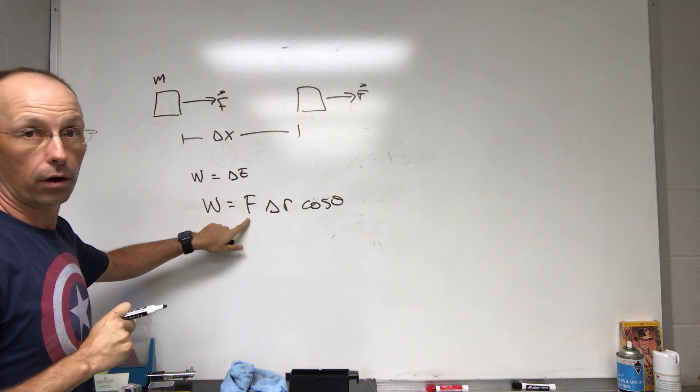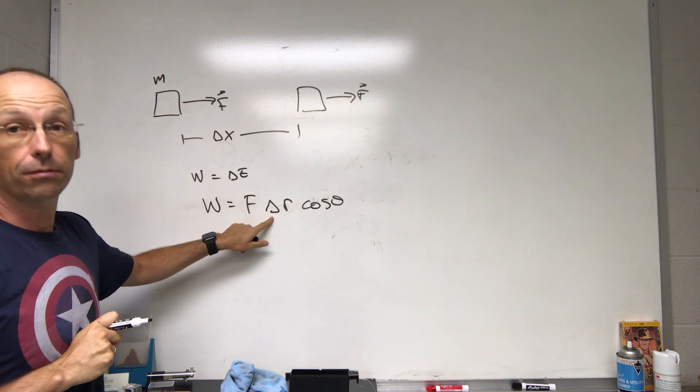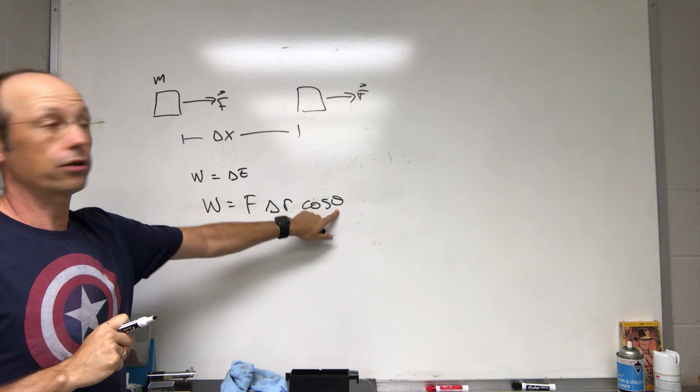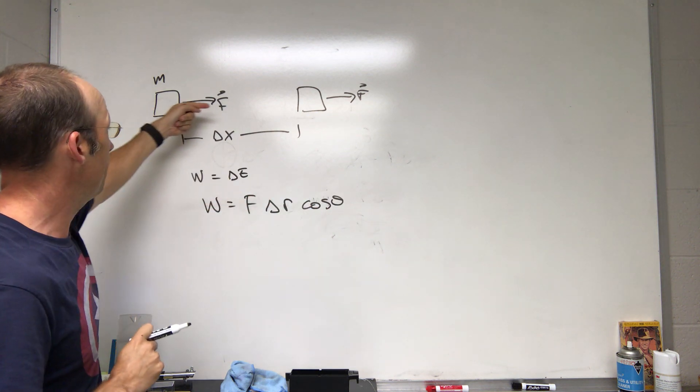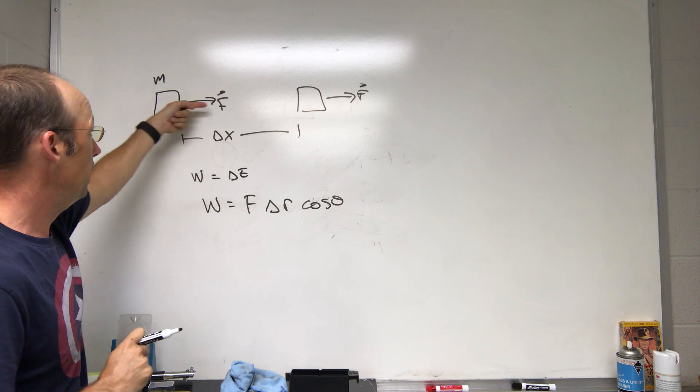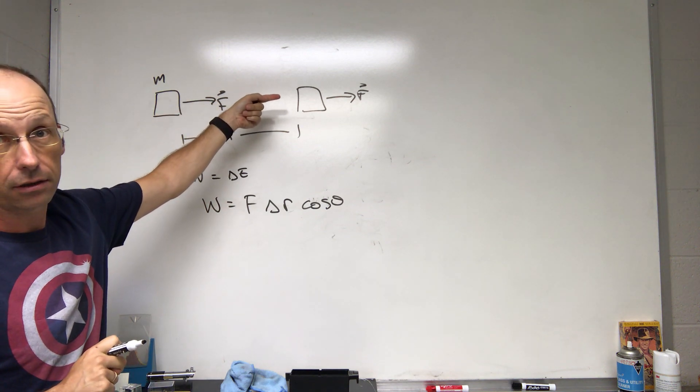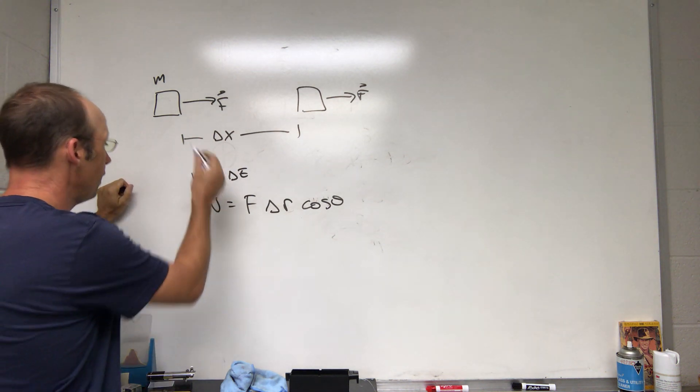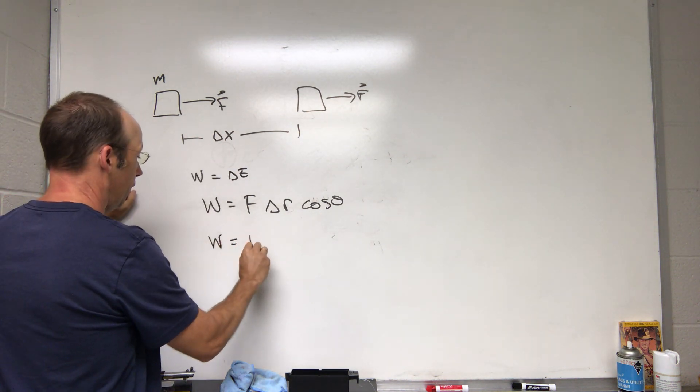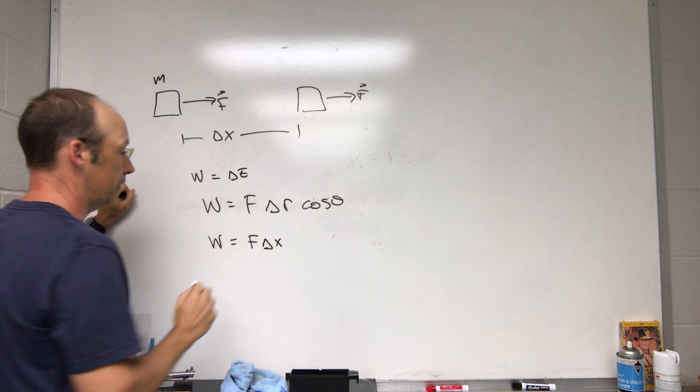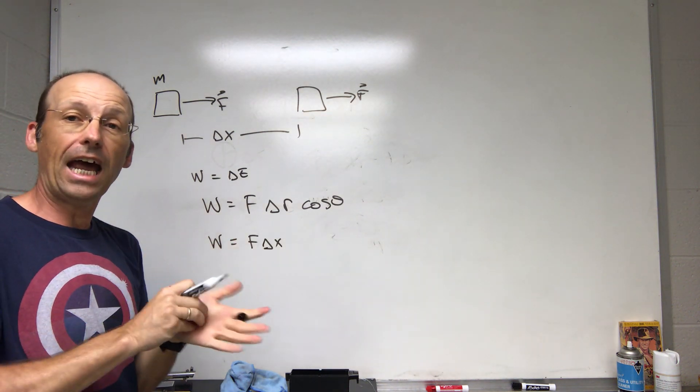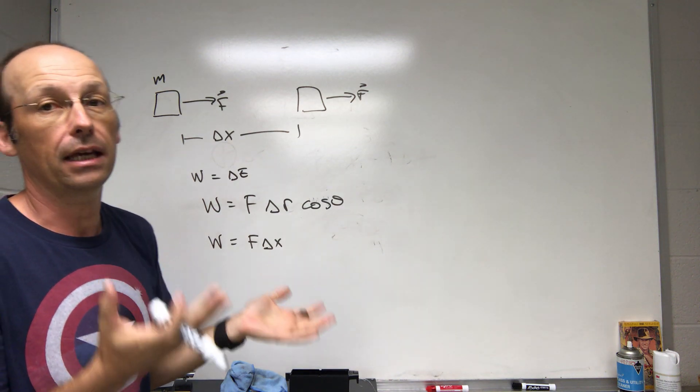F is the force that does the work, Delta r is the displacement, and theta is the angle between the force and the direction you're moving. In this case, my displacement is Delta x and F is in the same direction. So theta would be 0, cosine of 0 is 1, so in this case I get work is F Delta x.